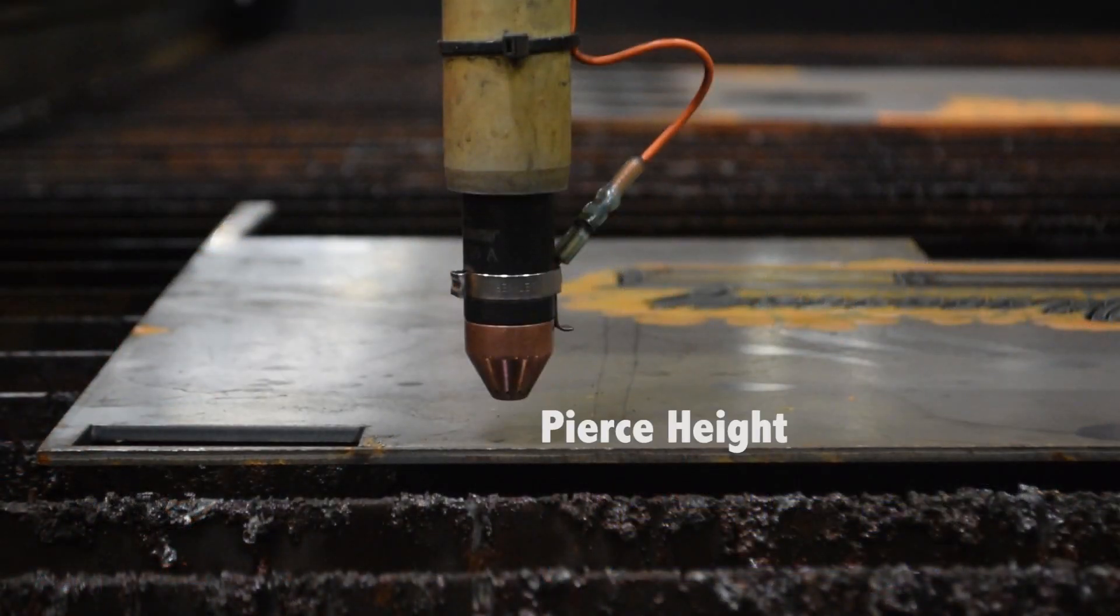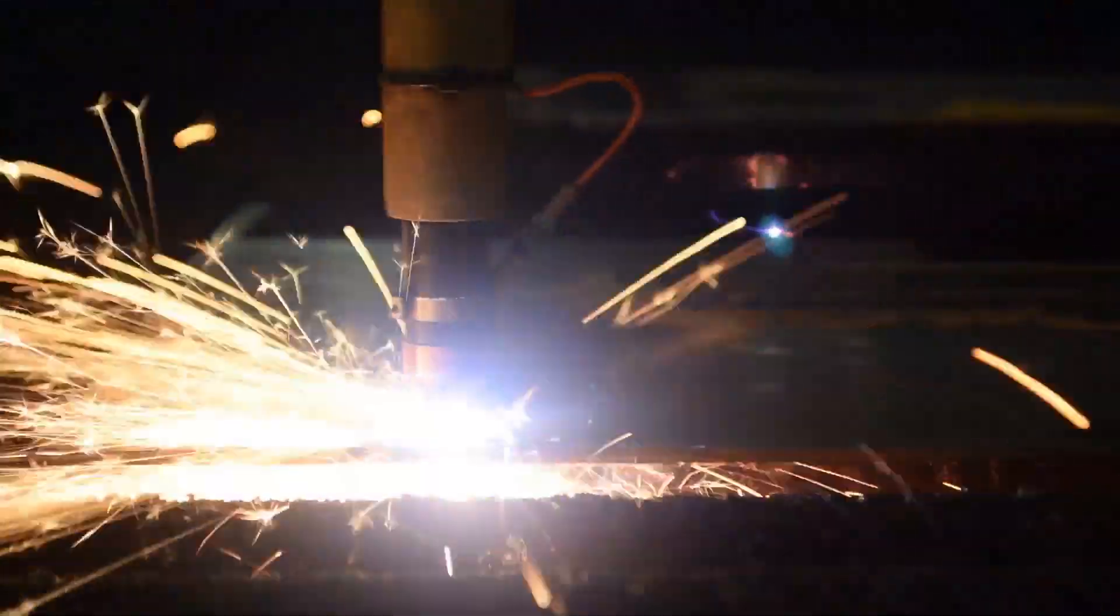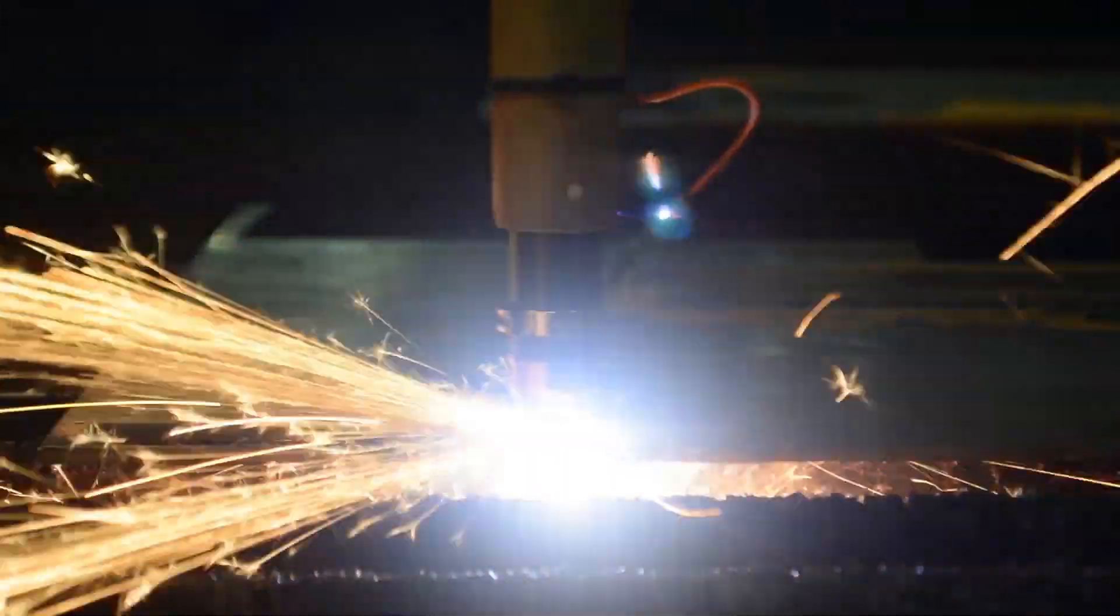The pierce height is the distance above the plate where the plasma cutter initiates the pilot arc. It is always higher than the cut height to prevent molten metal from splashing back up into the torch head.